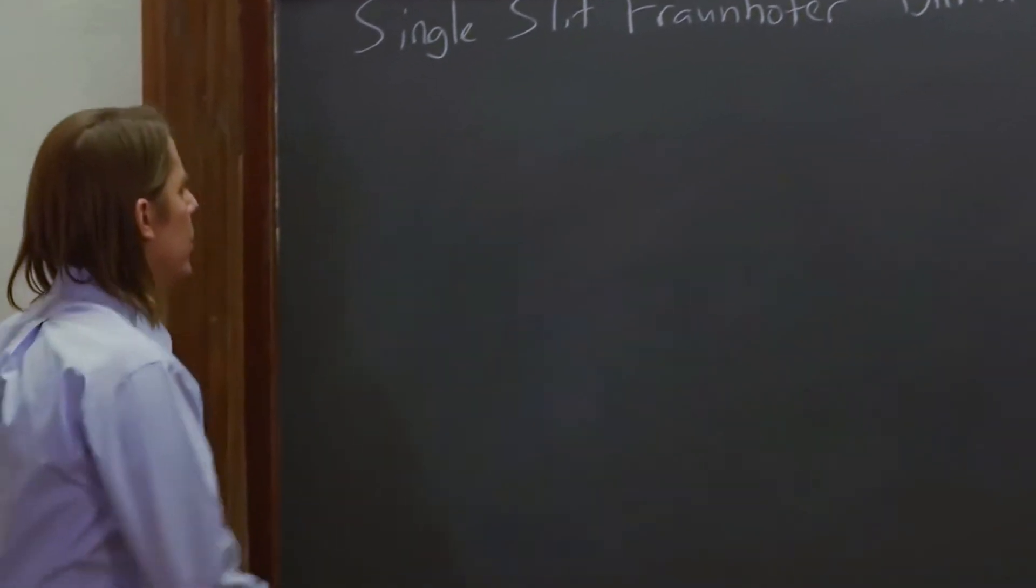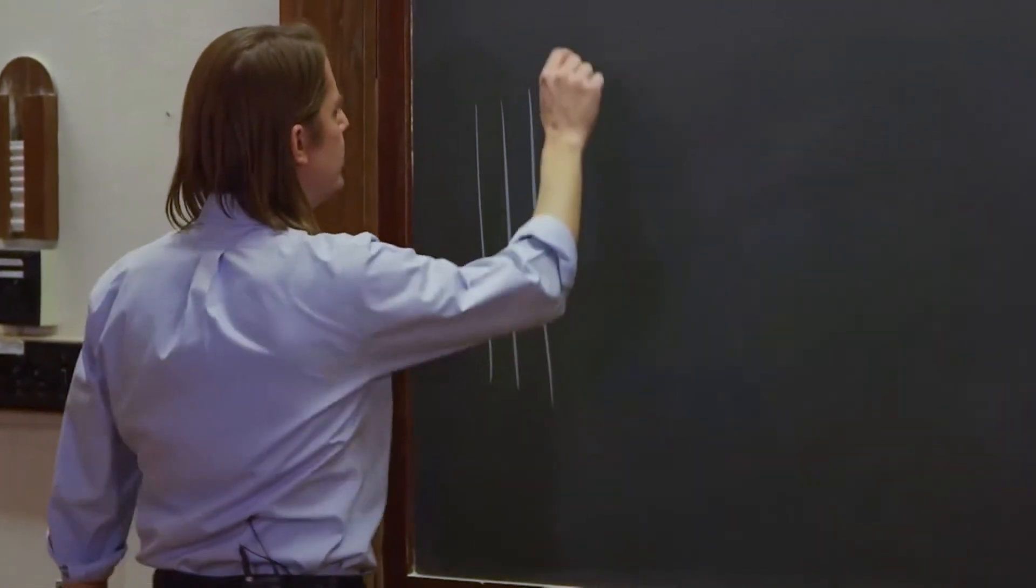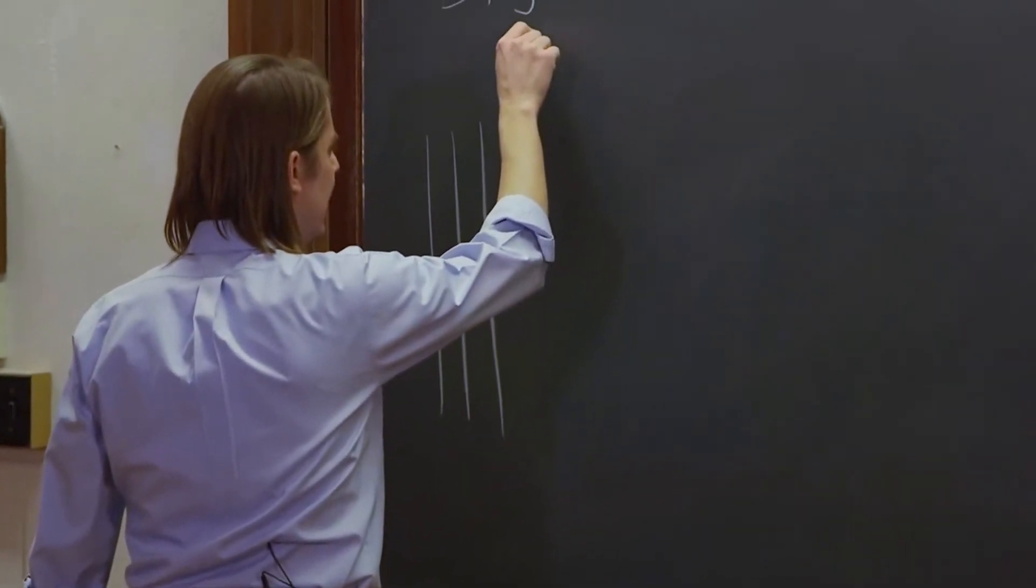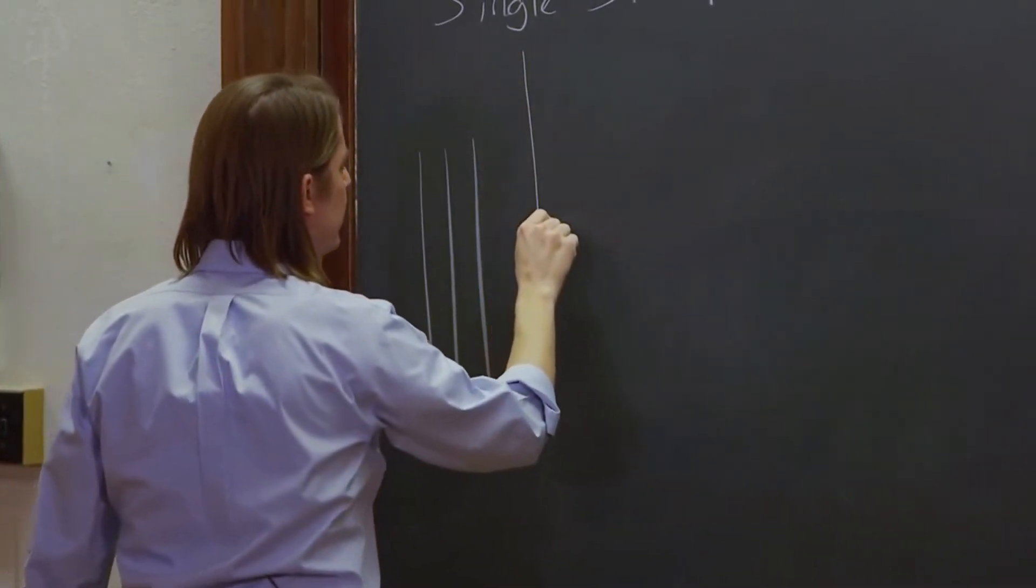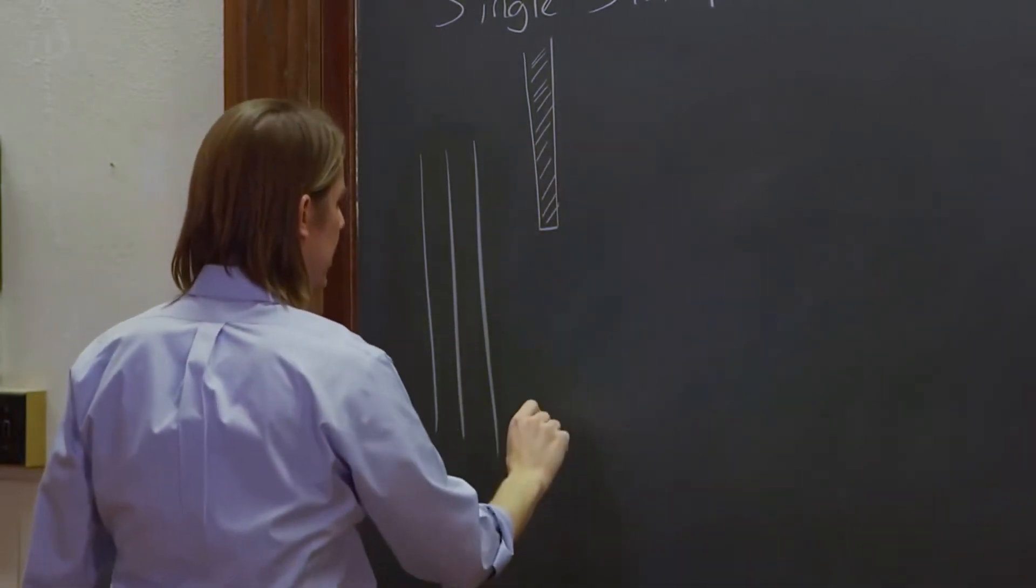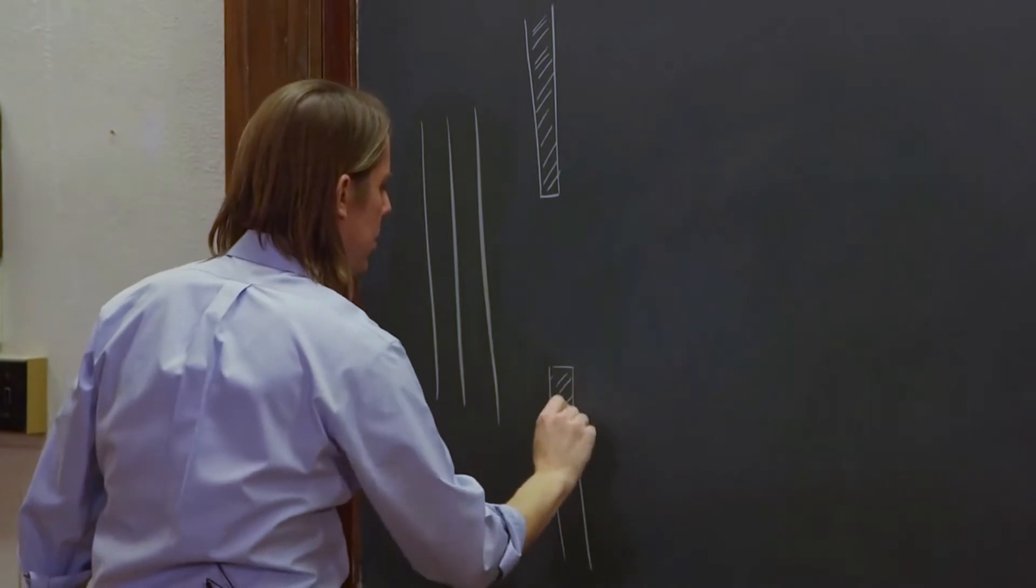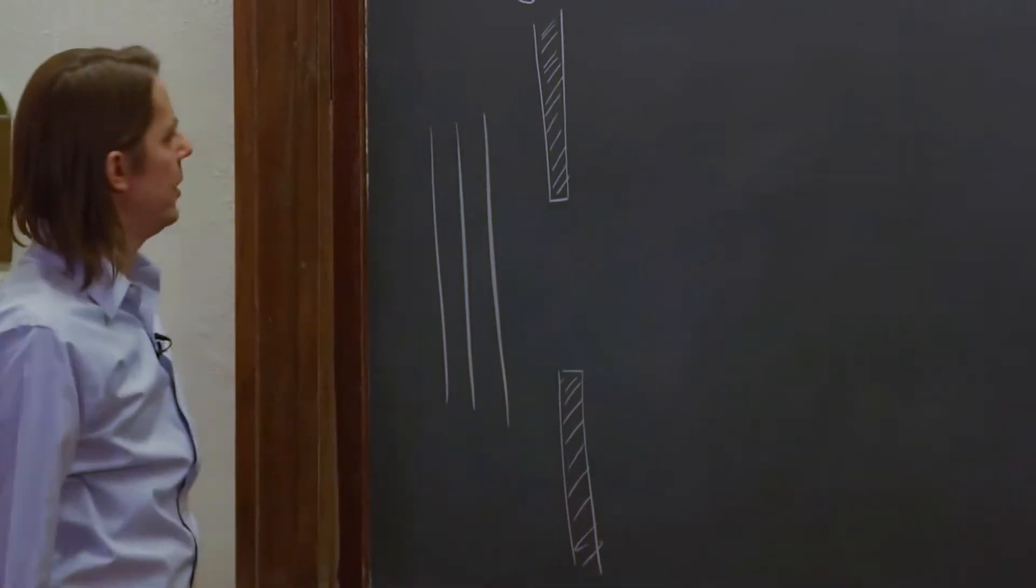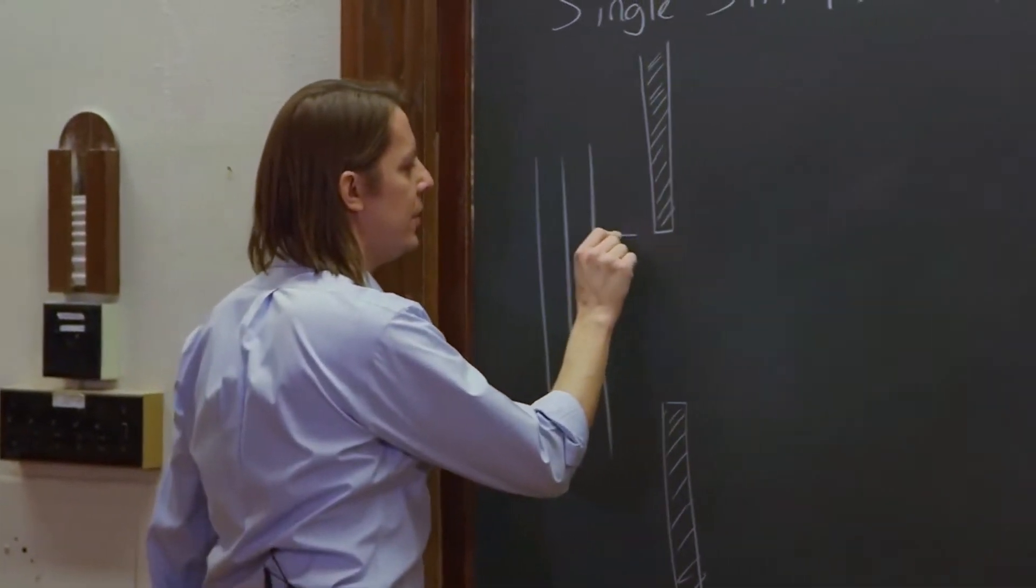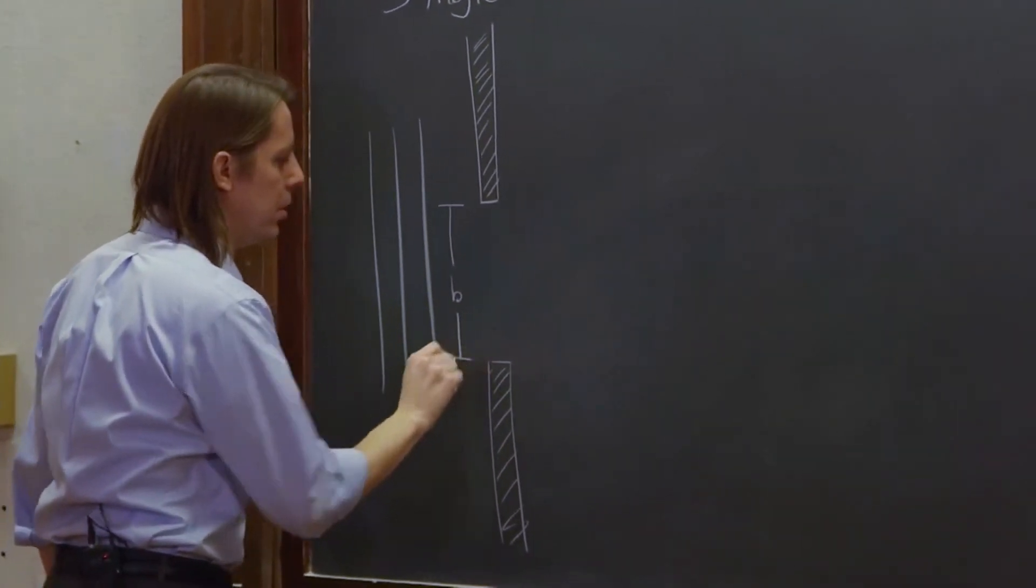So we are going to have a plane wave approach a slit. I'm going to draw the slit as two opaque barriers, one down here, one here. And the width of the slit is B, like that.